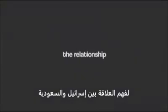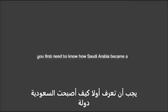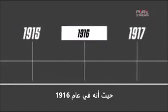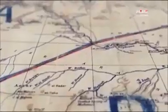To understand the relationship between Israel and Saudi Arabia, you first need to know how Saudi Arabia became a country. Exactly 100 years ago is a good place to begin a brief analysis of this region. For it was in 1916 that the British and French, along with Russian backing, signed the Sykes-Picot Agreement during World War I.